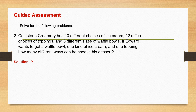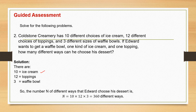Another problem: Goldstone Creamery has 10 different choices of ice cream, 12 different choices of toppings, and 3 different sizes of waffle bowls. If Edward wants to get a waffle bowl, one kind of ice cream, and 1 topping, how many different ways can he choose his dessert? There are 10 ice cream choices, 12 toppings, and 3 waffle bowl sizes. The number of different ways Edward can choose his dessert is 10 times 12 times 3, which equals 360 different ways. Therefore, there are 360 different ways Edward will choose his dessert.